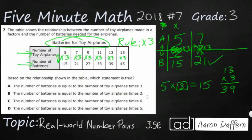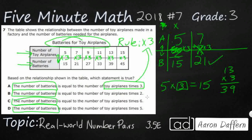But let's take a look at the answer choices, because each of our answers are actually being discussed through the number of batteries. From the batteries' point of view, the number of batteries is equal to the toy airplanes times 3. Well, it looks like that's exactly what we did, so I'm going to put a question mark on this one, but I think A might be our answer.